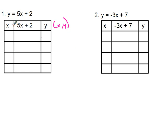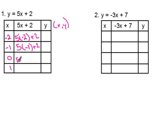You can choose whatever you want for your inputs — that's your x or domain. I like to choose integers close to zero: negative two, negative one, zero, and one. In the equation column, substitute your x values in: five times negative two plus two, five times negative one plus two, five times zero plus two, five times one plus two. The y column is just those solved: five times negative two is negative ten plus two is negative eight; five times negative one is negative five plus two is negative three; five times zero is zero plus two is two; five times one is five plus two is seven.